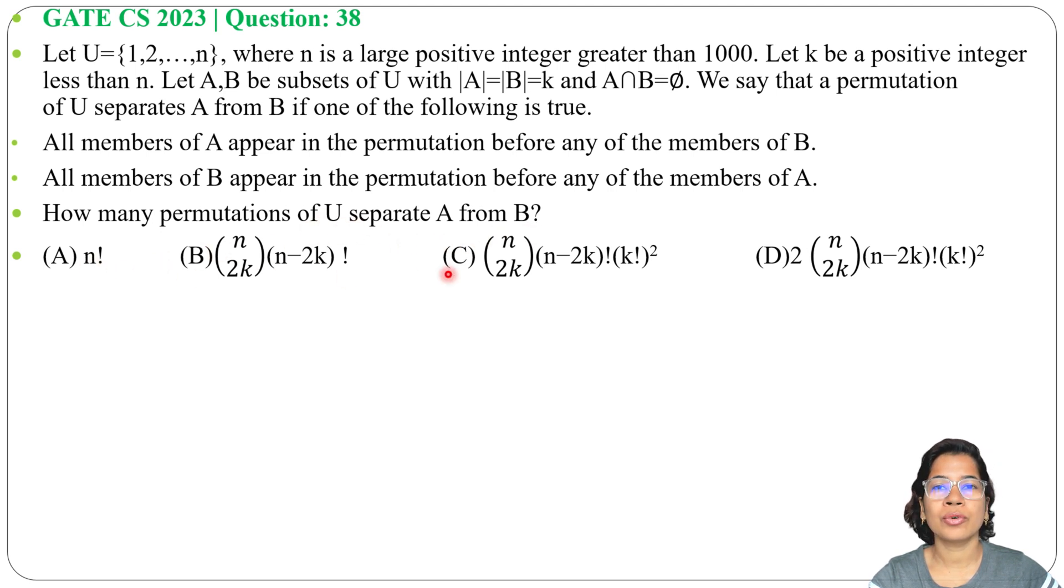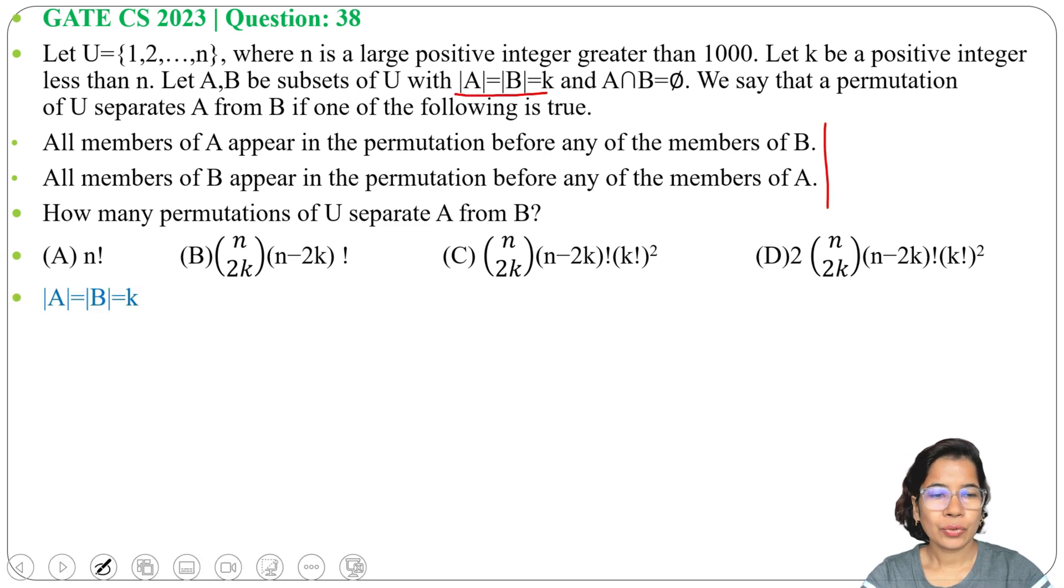How many permutations of U separate A from B? Four options are given. Here it's given |A| = |B| = k and there are two conditions: A can appear before B or B can appear before A. So A-B or B-A, that's why they can arrange in two ways.